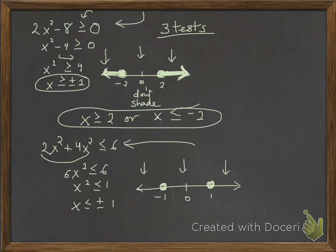So, I'll take 2. Let's take the number 2. I've got 2 squared is 4, 4 times 6 is 24. Is 24 less than or equal to 6? No. So, I do not shade. In the middle, let's take 0. I'm going to have 0 times 6, or 0 is less than or equal to 6. Yes. So, I will shade.